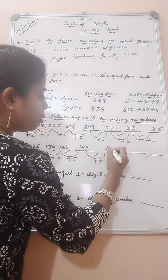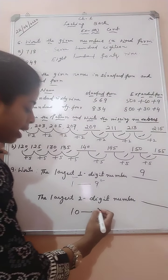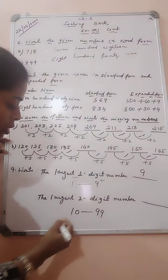The largest two-digit number. Again, two-digit number. Our two-digit number starts from 10 and ends at 99. So 10 will be the smallest two-digit number and 99 will be the largest two-digit number.